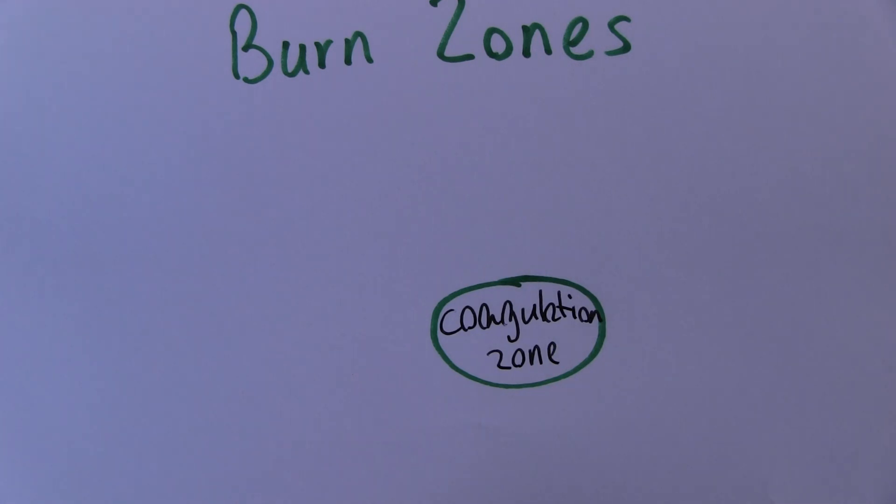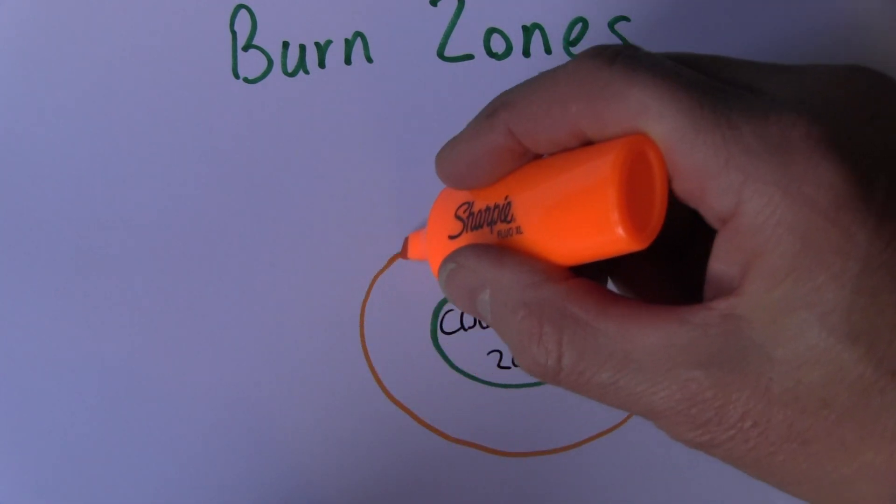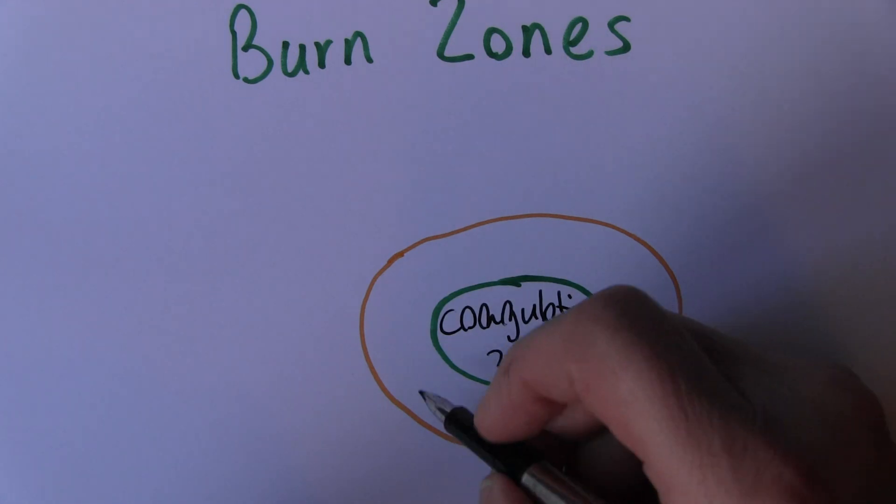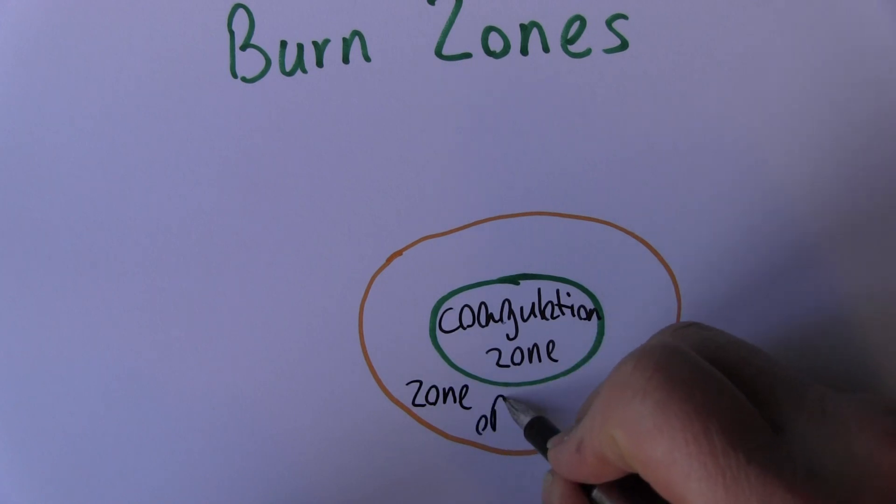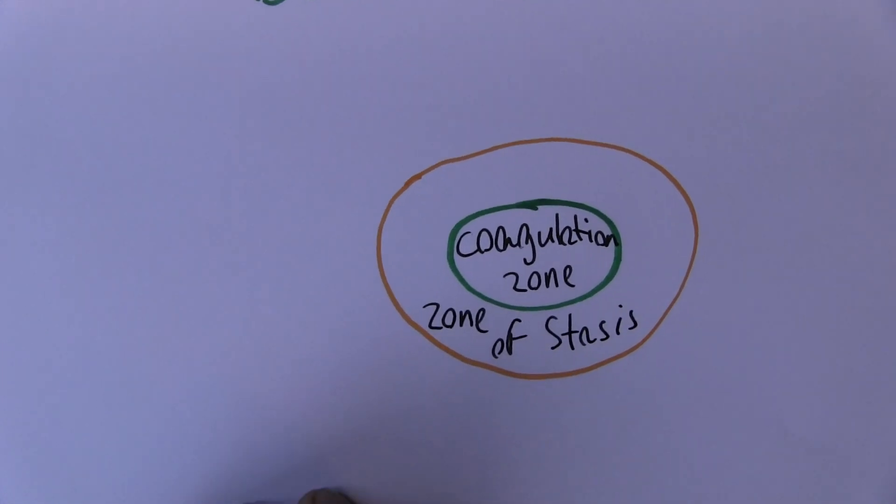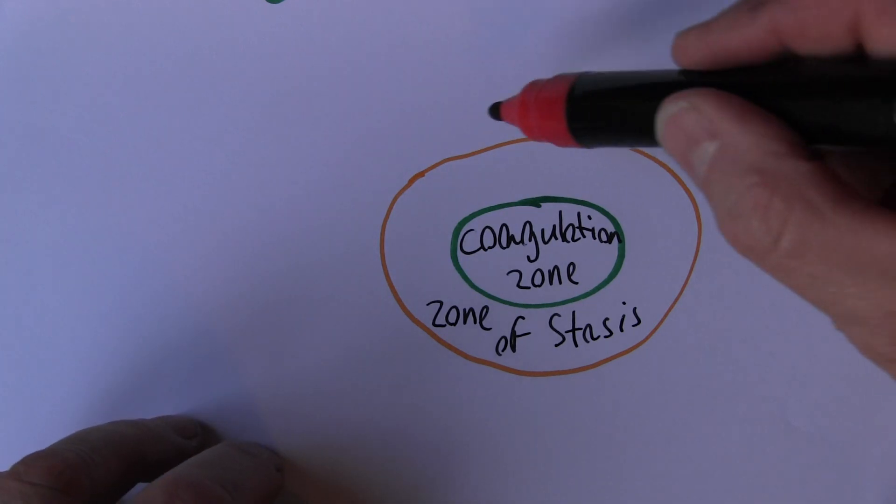But around that we have another zone where the circulation has been inhibited but the tissues have not been killed. This is called the stasis, or the zone of stasis, where the blood supply is reduced but the tissue is still viable. And around that we've got another zone here.